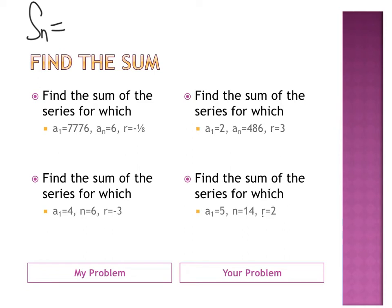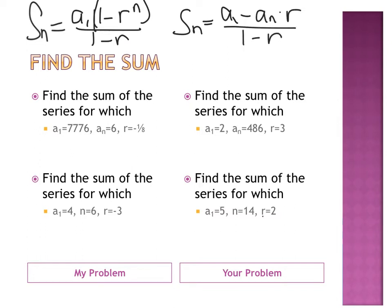Okay, so we have two sum formulas that we use for geometric series. The first one is Sn equals A1, my first term, times 1 minus R to the n power, divided by 1 minus R. My second sum formula is A1 minus An times R, divided by 1 minus R.